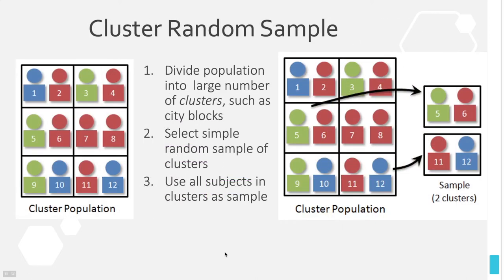For cluster random sampling, we first divide the data into different groups — we also do this for stratified random sampling. With cluster sampling, the way we determine groups is usually geographic, because we're going to take whole clusters at a time, which saves us an enormous amount of money.